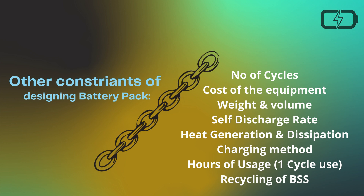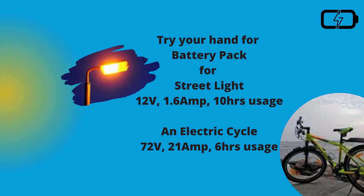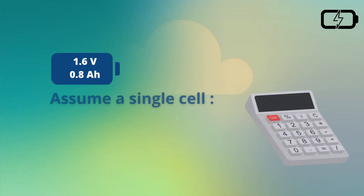Now let's try your hand at a practice problem. Find the battery pack (BSS) for: first, a street light rated at 12 V, 1.6 A, and 10 hours of usage; second, an electric cycle rated at 72 V, 21 A, to be used for up to 6 hours. For both problems, use a single cell of 1.6 V and 0.8 Ah to calculate.